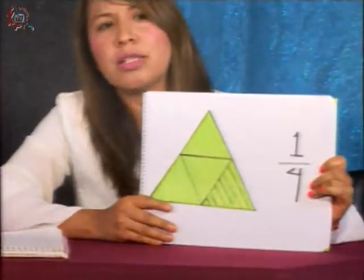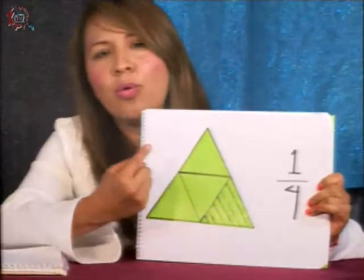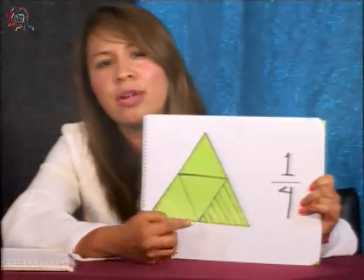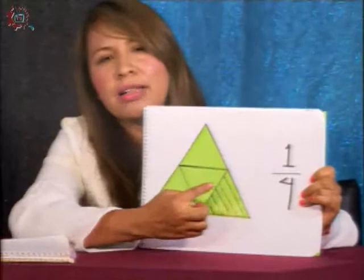Quiero retomar un poquito los temas que dejamos pendiente. Cuando nosotros ingresamos a clases con los chicos de primer año, vimos los temas de qué es una fracción, por qué parte se compone una fracción. Nosotros sabemos que una fracción está compuesta por un numerador y por un denominador. Traigo aquí un ejemplo: yo tengo un entero dividido en cuatro partes, tomo una de esas partes y esa sería mi numerador; como el entero total lo dividí en cuatro partes, esas cuatro partes son el denominador.